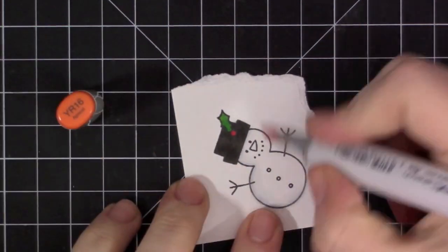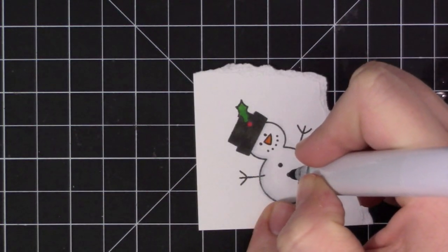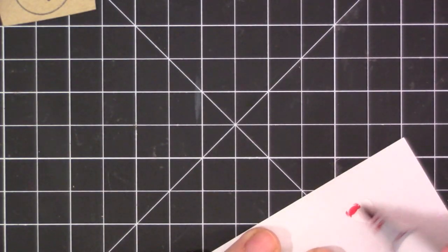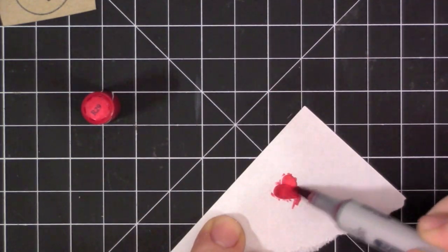I like to use the grays when trying to achieve a black look just because it looks more realistic and doesn't look so flat when you do a little bit of shading with the gray colors. And then I also colored in his little nose with an orange Copic marker and his little buttons with the darkest gray color.